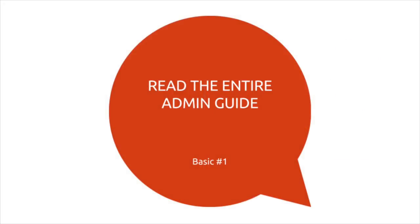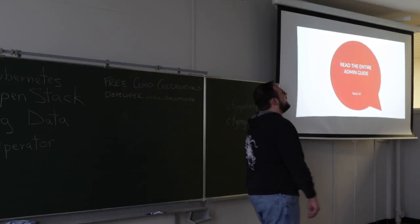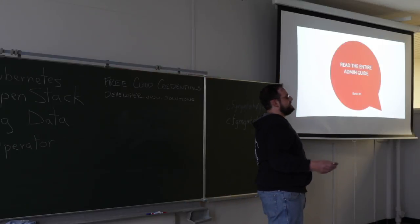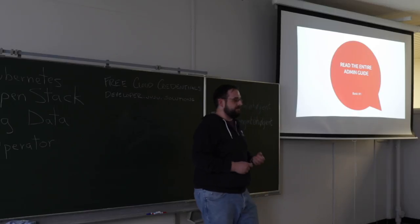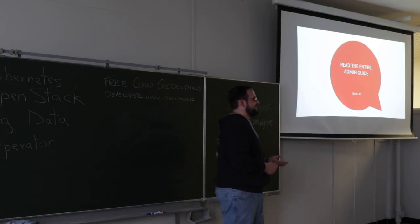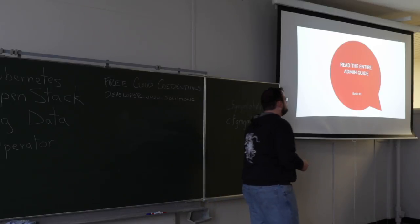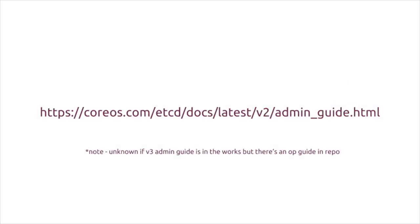Some of this may seem like common sense. We're going to talk about things like backups, how to probe health, and things of that nature. But these are all very important building blocks to understanding how we can actually interface with etcd and not have a constant fear of something catching fire in production. The first basic is probably something nobody wants to hear, but please read the fine manual. The admin guide has everything you need to know to get started running etcd in production. They have a V2 guide and the V3 guide content is being posted — it's got a lot of great information.